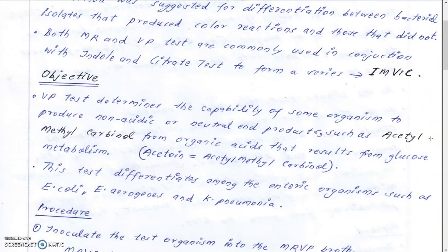The Voges-Proskauer test determines the capability of microorganisms to produce non-acidic or neutral end products. Non-acidic or neutral end products have a pH of near 6.2 to 7. These include acetylmethylcarbinol, also called acetoin, derived from organic acids from glucose metabolism. Only glucose is broken down to pyruvic acid, which is then broken down to further end products via many fermentative reactions — it can form 2,3-butanediol, succinic acid, lactic acid, acetic acid, or other acids. We are testing whether acetoin is formed or not.